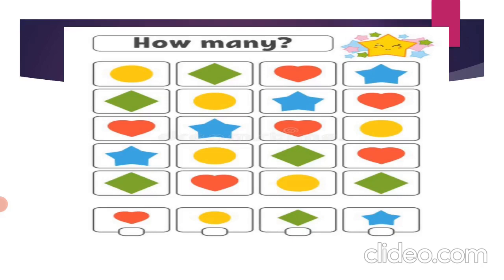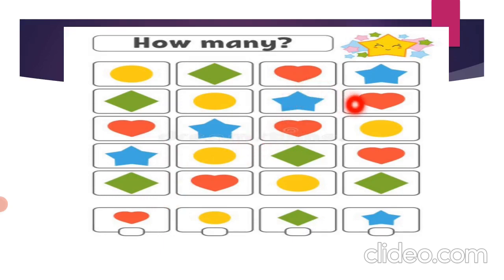So now, first is heart shape. Come on, count how many heart shapes are there: one, two, three, four, five, and six. So there are six hearts. Now next is yellow circle. Come on, count: one, two, three, four, and five. So five circles are there.